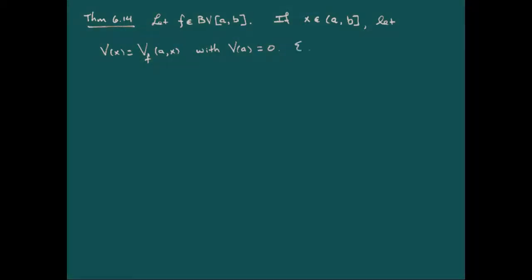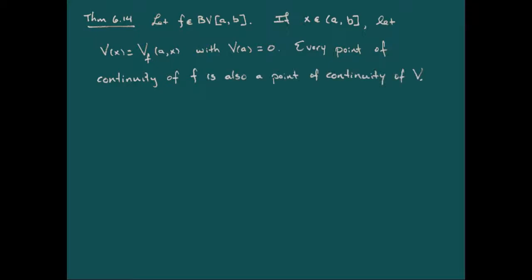then every point of continuity of f is also a point of continuity of v, and the converse is also true: if v of x is continuous at a point, then f of x is going to be continuous at that point. So let's see if we can go about finding the proof for that.